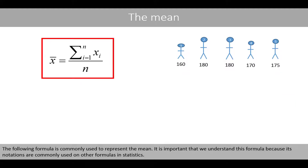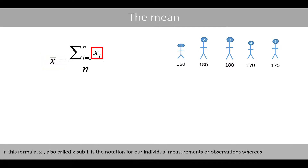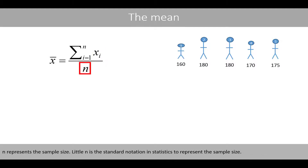The following formula is commonly used to represent the mean. It is important that we understand this formula because its notations are commonly used in other formulas in statistics. A letter with a horizontal line above it usually denotes the sample mean of something. In this case, we call this notation x-bar, which represents that we calculate the mean of the variable x. In this formula, xi, also called x sub i, is the notation for our individual measurements or observations, whereas n represents the sample size.